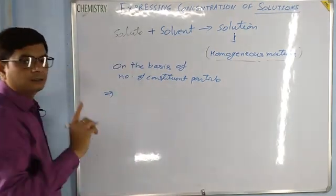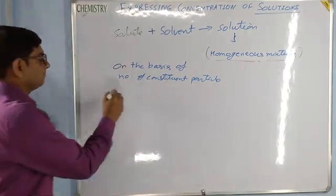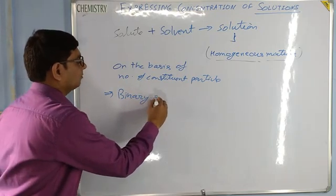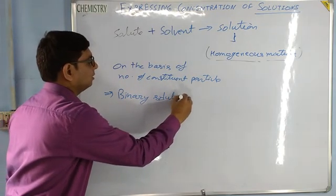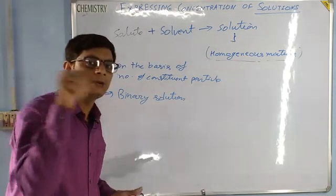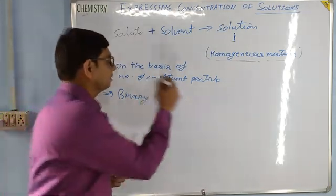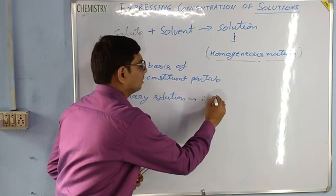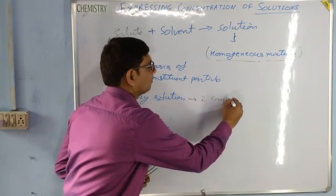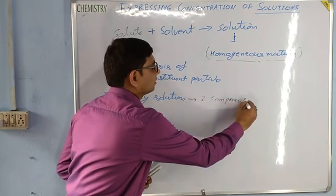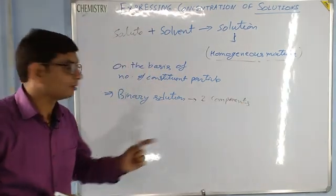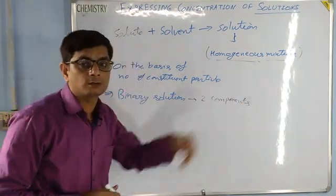Here we see the solution that is binary solution. What do you mean by binary solution? If one solute and one solvent is there, then there are only two components. Two components are there, and it is called binary solution — one solute, one solvent.